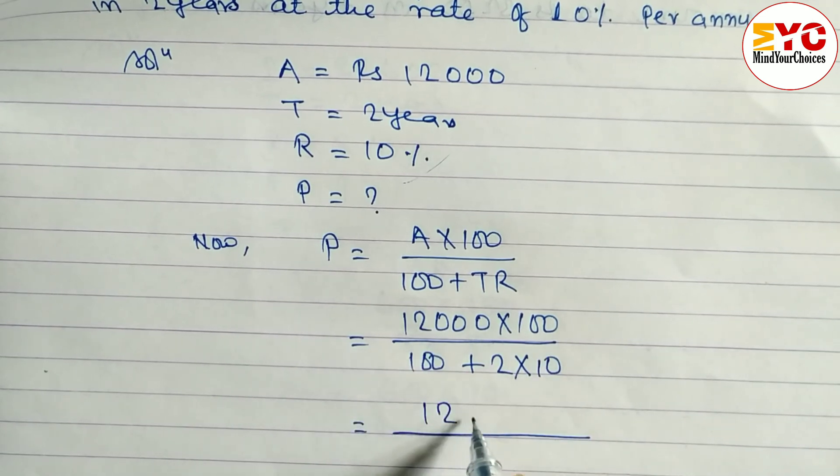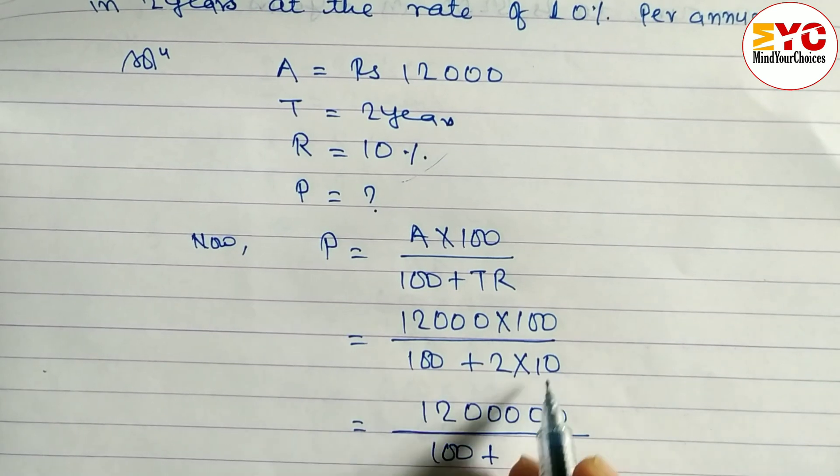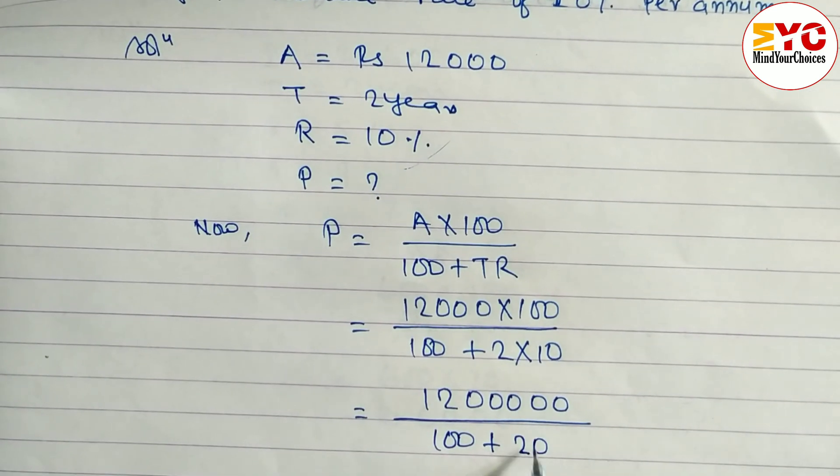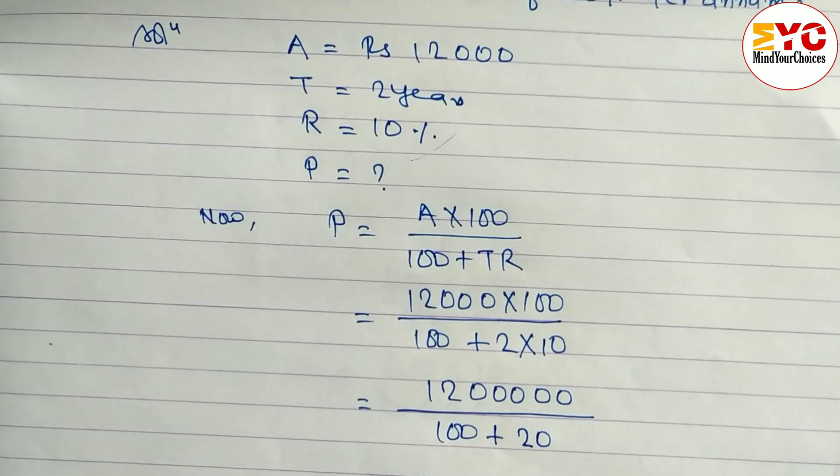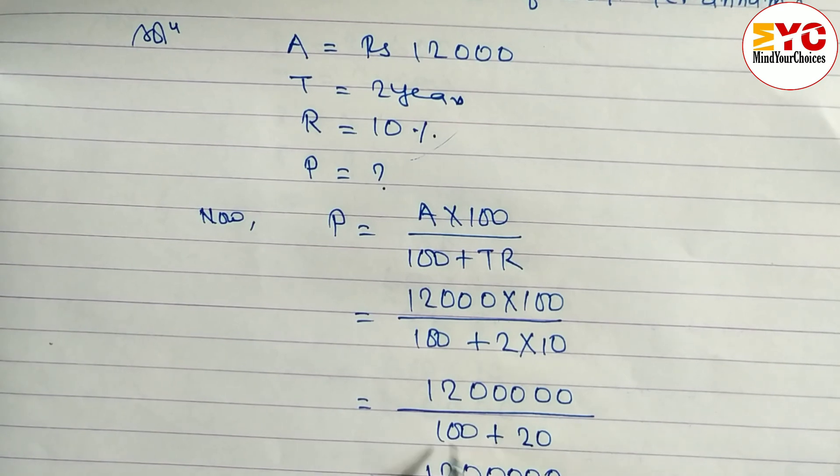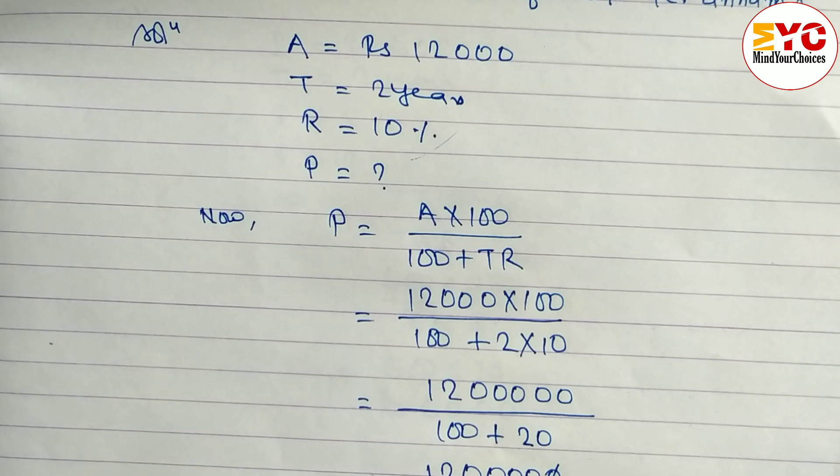We have to multiply: 1200000. We have to add. And 100 plus 2 into 10, we get here 20. Let's add. Then only we have to divide. 1200000 divided by, when you add we get 120. Cancel zeros. 12 ones are 12. How many zeros here? 1, 2, 3, 4.